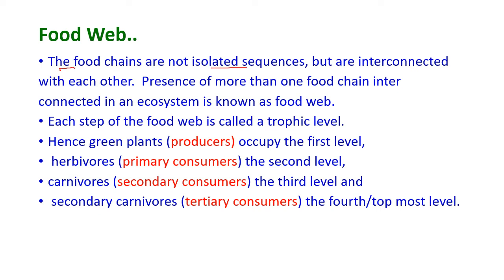The food chains are not isolated sequences but are interconnected with each other. The presence of more than one food chain interconnected in an ecosystem is known as the food web. Each step of the food web is called a trophic level or energy level.